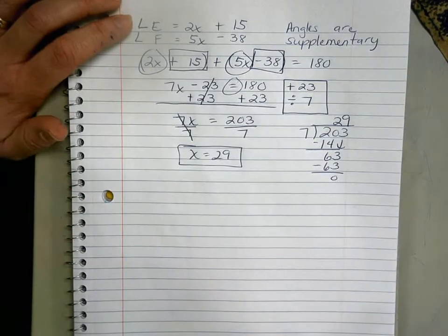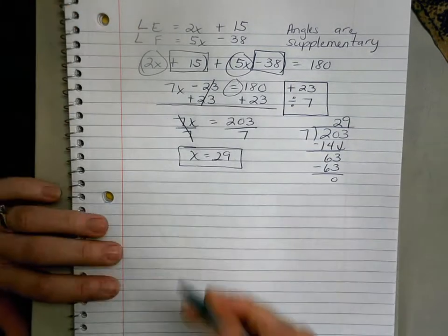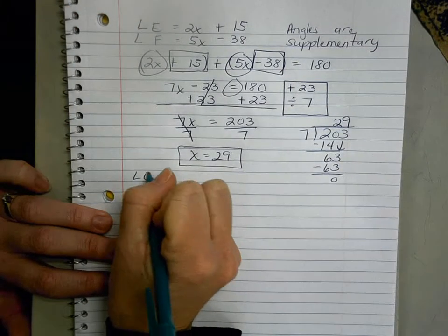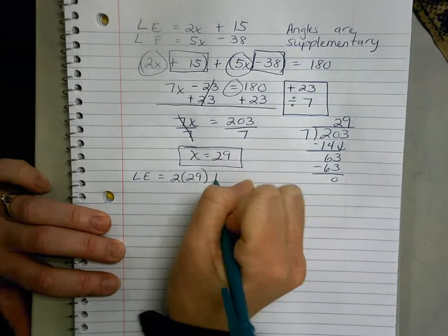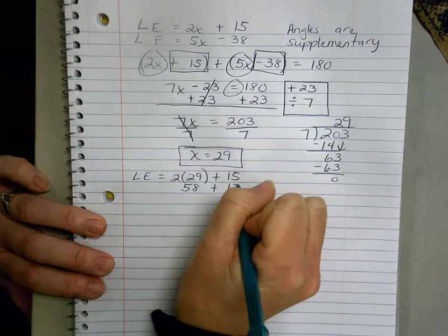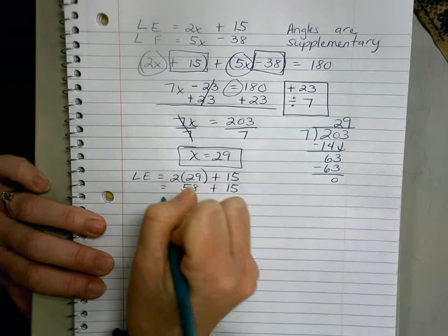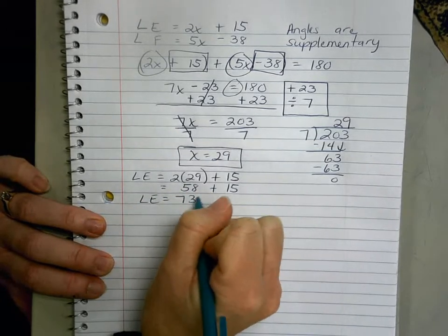So now we want to take the 29 and put it back into each expression. So angle E was 2x, so now I can say 2 times 29 plus 15, which is going to be 58 plus 15, so when I add them together I should get angle E equals 73 degrees. That's your first answer.